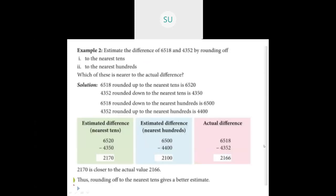We also saw estimated difference. For estimated difference, you first round off the numbers and then find their difference by subtracting them. We saw different examples of rounding off numbers to nearest tens and hundreds and then estimating their difference. To find the actual difference, you do normal subtraction using the numbers exactly as given.